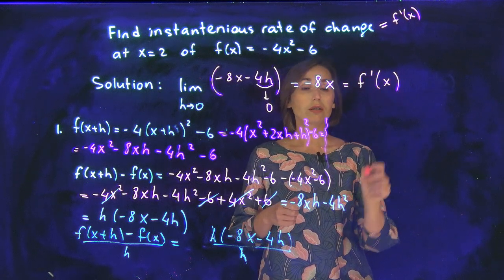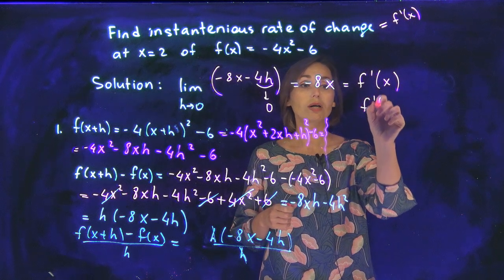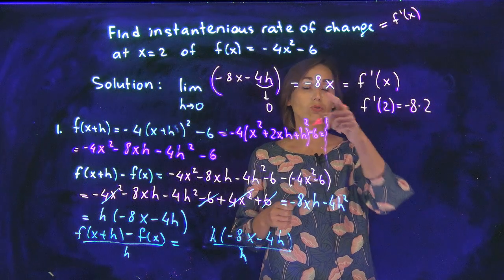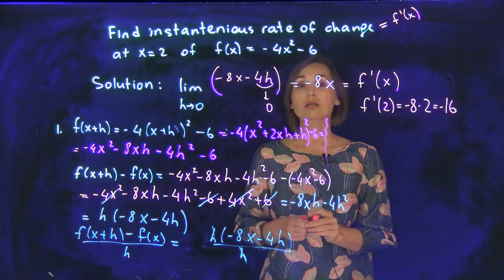So let's evaluate it at 2. f prime at 2 will be negative 8 times 2. That is negative 16.